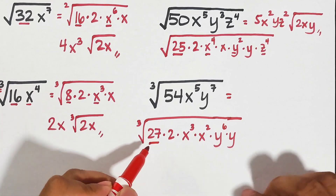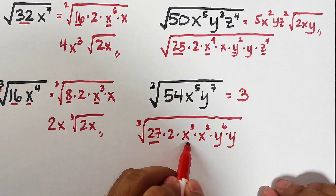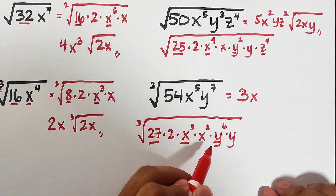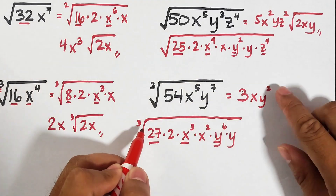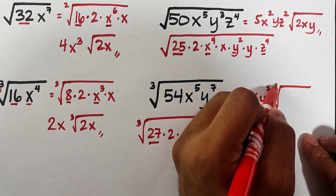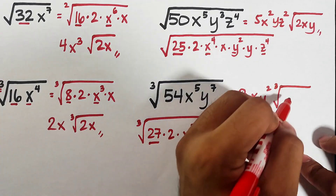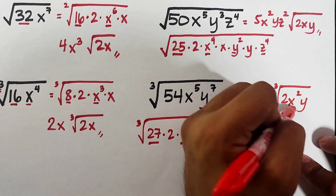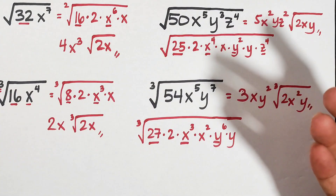Now we are ready to simplify. The cube root of 27 is 3; the cube root of x cubed is x; the cube root of y raised to the sixth is y squared, since 6 divided by 3 is 2. Then we copy the remaining bases inside: 2, x squared, and y. This is the answer: 3xy squared times the cube root of 2x squared y.